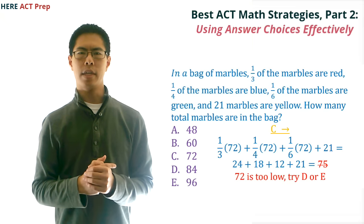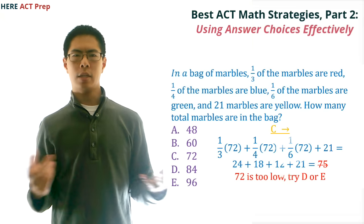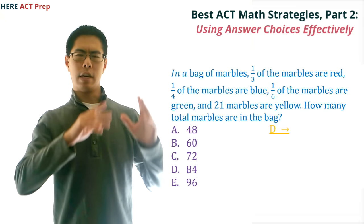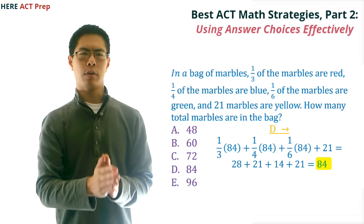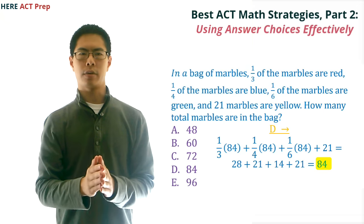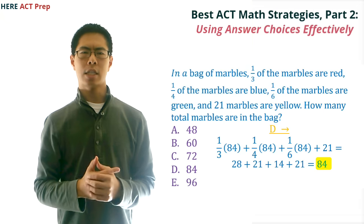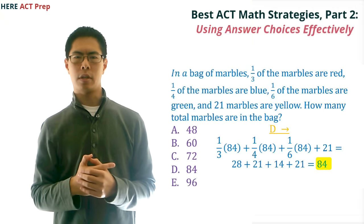which means we should try D or E for our next answer choice to use. Let's try D or 84. If there are 84 total marbles in the bag, then one-third or 28 are red, one-fourth or 21 are blue, one-sixth or 14 are green, and 21 are yellow. This adds up to 84, which is what we were aiming for, so our answer is D.